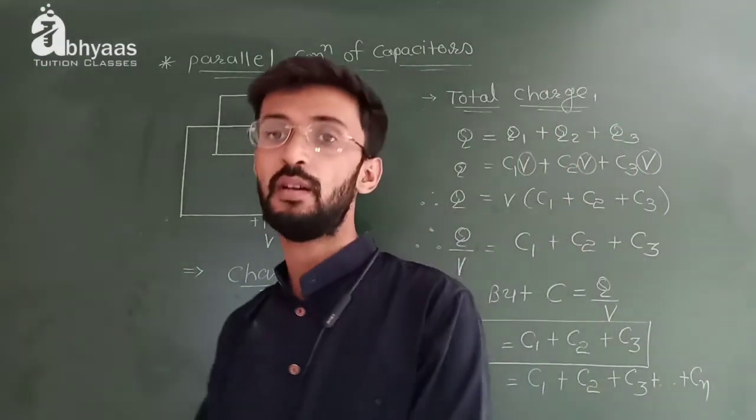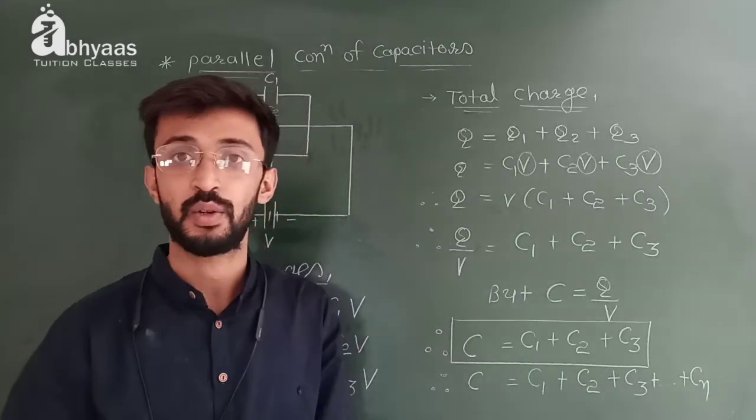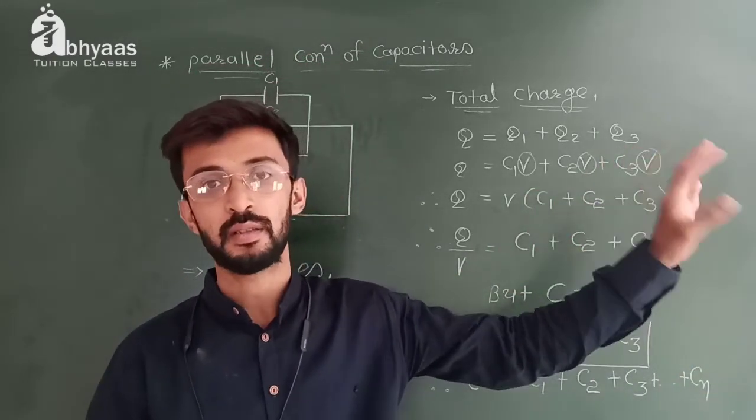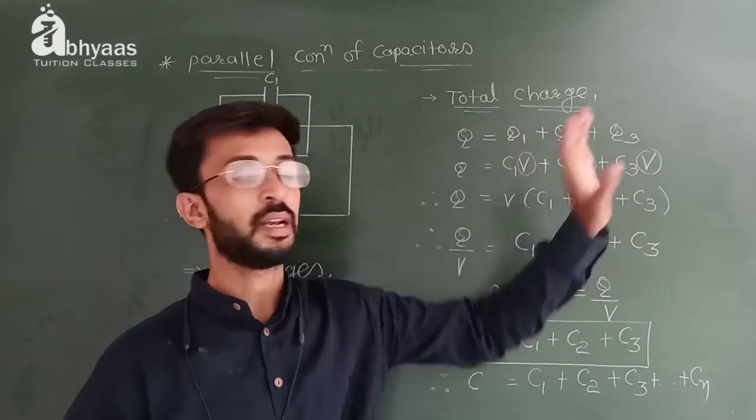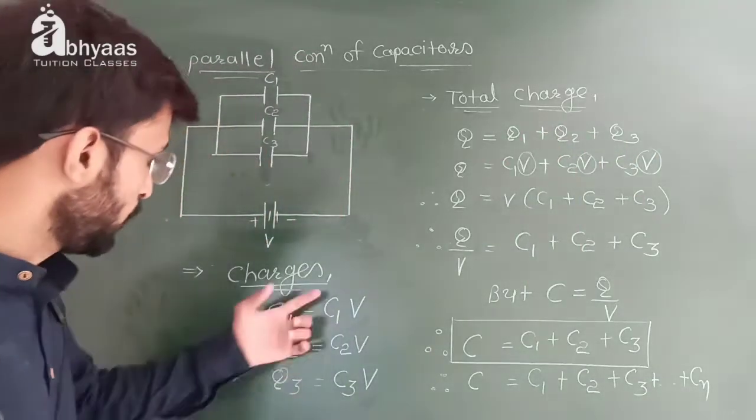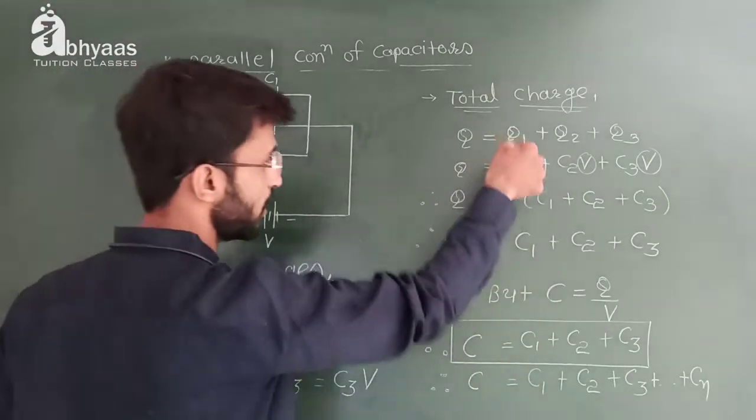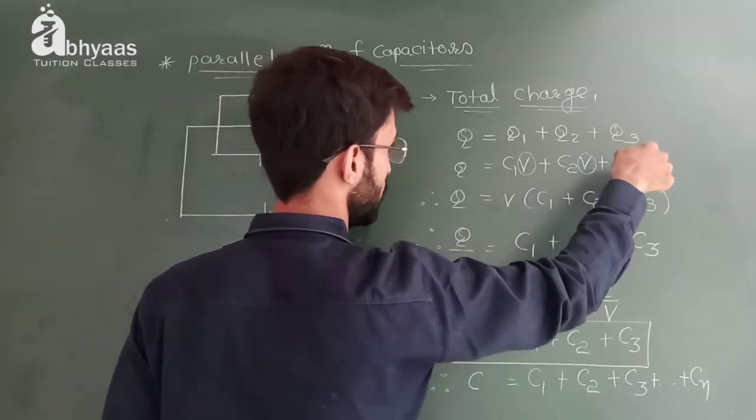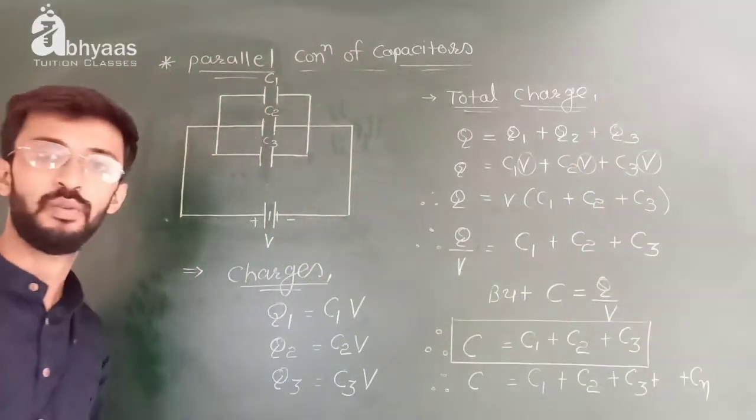Next step: total electric charge Q is given by Q1 plus Q2 plus Q3. From the given equation, Q1 is C1 into V, Q2 is C2 into V, and Q3 is C3 into V.